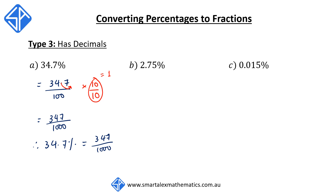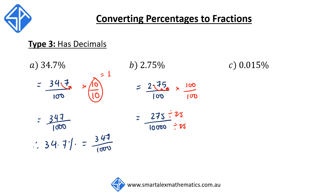Question B: 2.75%. We first write this as 2.75 over 100. Since 2.75 has two decimal places, we multiply the top and the bottom by 100, moving the decimal point two places to the right. This gives us 275 on top and 10,000 on the bottom. This fraction can be further simplified by dividing top and bottom by 25, giving a final answer of 11 over 400. So 2.75% is equal to 11 out of 400.